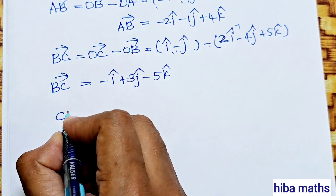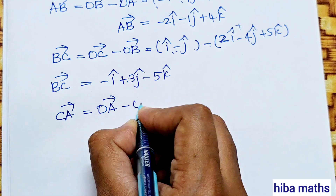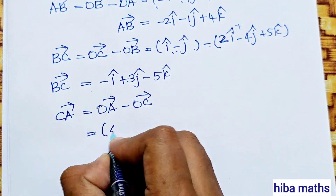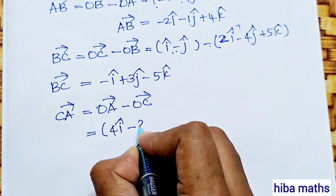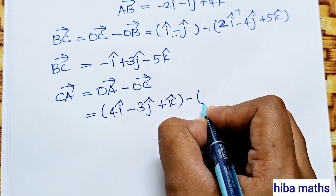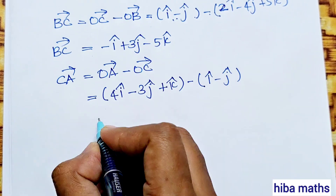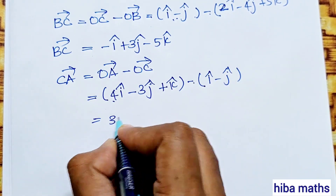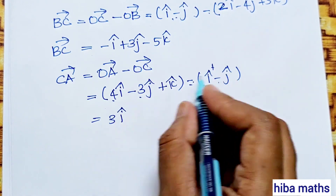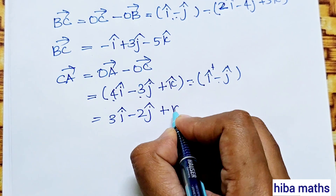CA vector = OA vector - OC vector. That is (4i - 3j + k) - (i - j + 0k) = (4-1)i + (-3+1)j + (1-0)k = 3i - 2j + k. This is the CA vector.